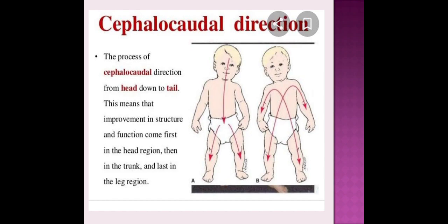The child gains control of the head first, then arms, then the legs. Infants develop the control over their head first, then they gain control over the trunk, and then the legs.